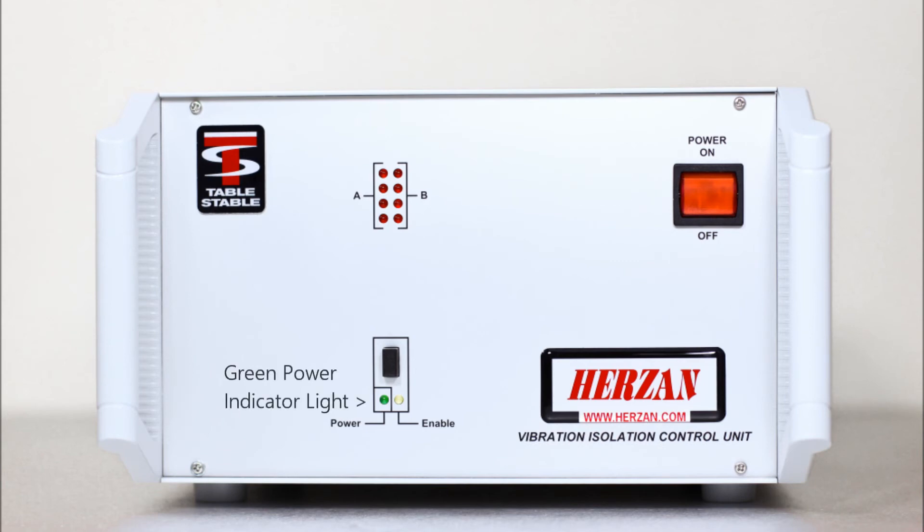The green power indicator light will now turn on and the red module indicator lights will begin to flicker. These lights demonstrate the impact of vibrations present on the AVI sensors, which will go away once the active isolation component of the AVI platform has been enabled.